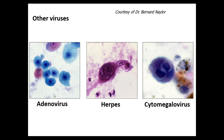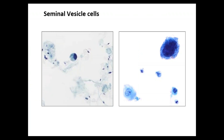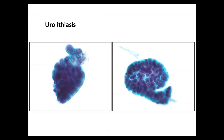Another mimicker is the seminal vesicle cell, which can look pleomorphic with hyperchromasia and irregular nuclear contours. However, telltale signs help differentiate from high-grade urothelial carcinoma: first, the company they keep — if you see sperm in the sample, these are seminal vesicle cells. Second, if you look closely at the cytoplasm, you can see lipofuscin pigmentation, which is the giveaway that this is not high-grade urothelial carcinoma.